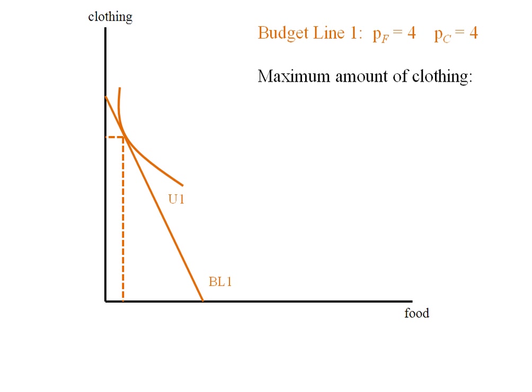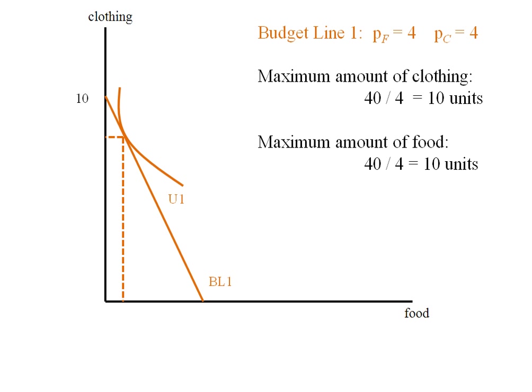The maximum amount of clothing we can buy is the forty dollars of income divided by the price of four dollars, or ten units. The maximum amount of food is found the same way: forty divided by four — here the four refers to the price of food — so we also get ten units.